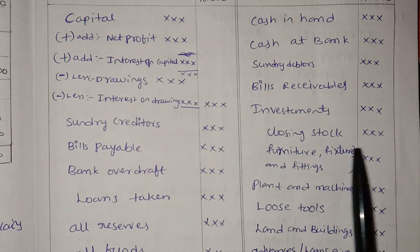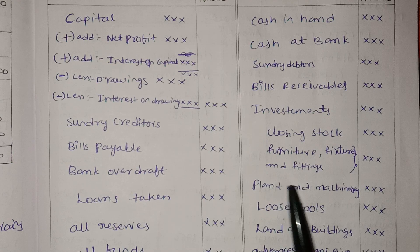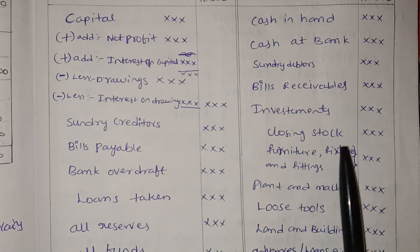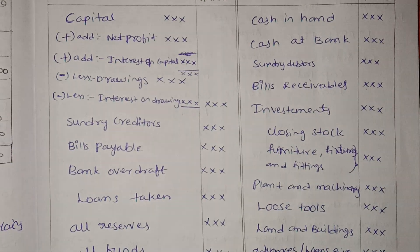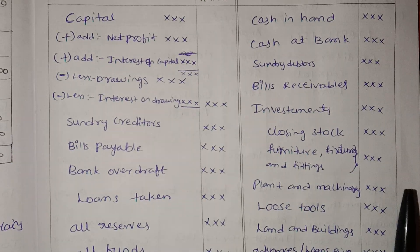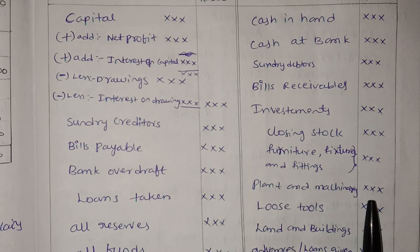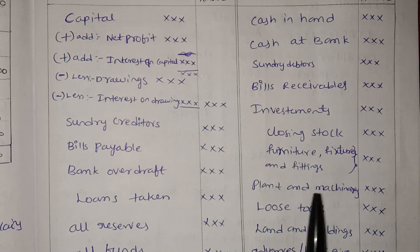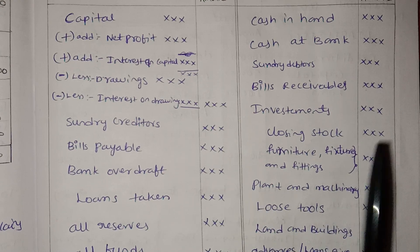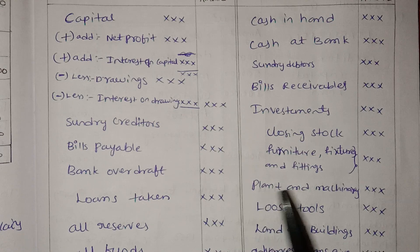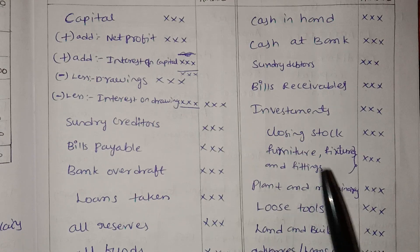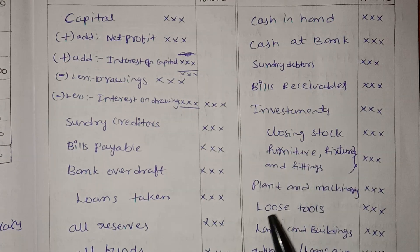Closing stock is an asset. Fixed assets include furniture, fixtures and fittings, plant and machinery, loose tools, and land and building. Advance loans are also listed under assets.